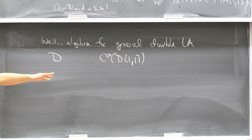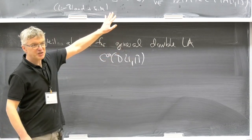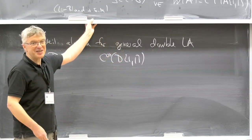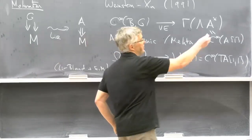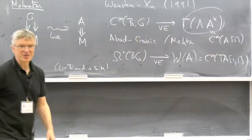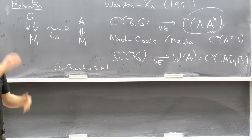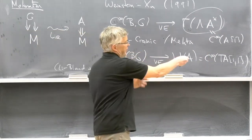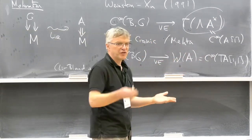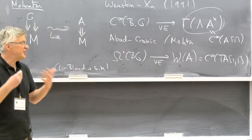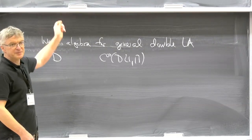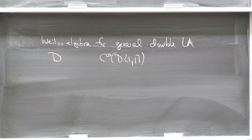We already knew what the Weil algebra should be for a general double Lie algebroid, and so we could get started. But I'm more classically inclined, and I wanted to have a classical description of this double complex — which in some sense was given by Crainic in a special case, but kind of complicated. We wanted an easy classical description of this double complex, and this is basically what I figured out in joint work with Jeff Pike.